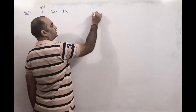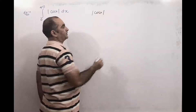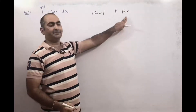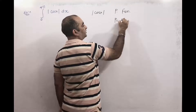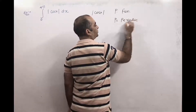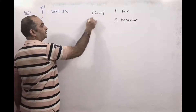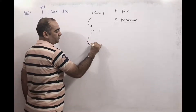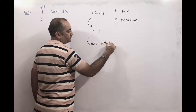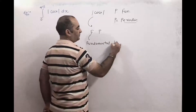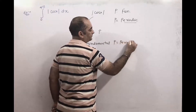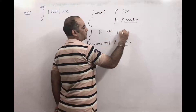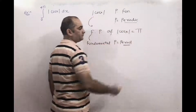Modulus of cos x is a periodic function. The fundamental period — FP means fundamental period — of modulus of cos x is π.